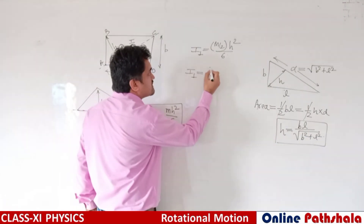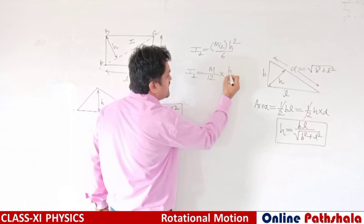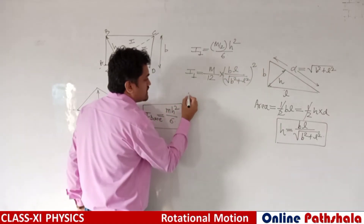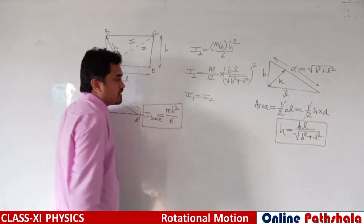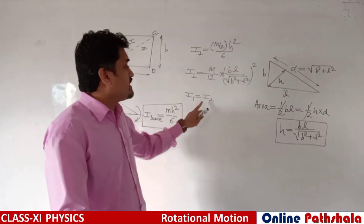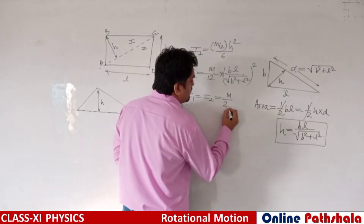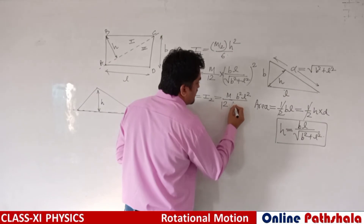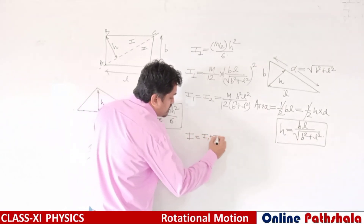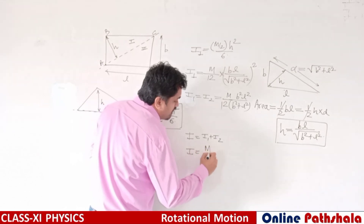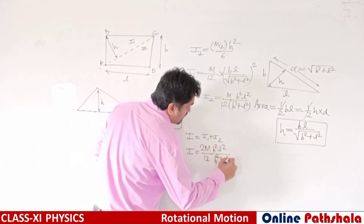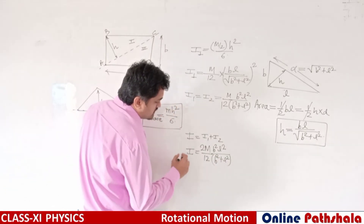The moment of inertia of the first triangle is I₁ = (m/12) · (B·L / √(B² + L²))², which simplifies to I₁ = m·B²·L² / [12·(B² + L²)]. Since I₁ = I₂ (both triangles rotate about the same diagonal base), the total moment of inertia is I = I₁ + I₂ = 2 × m·B²·L² / [12·(B² + L²)] = m·B²·L² / [6·(B² + L²)]. This is the final answer.